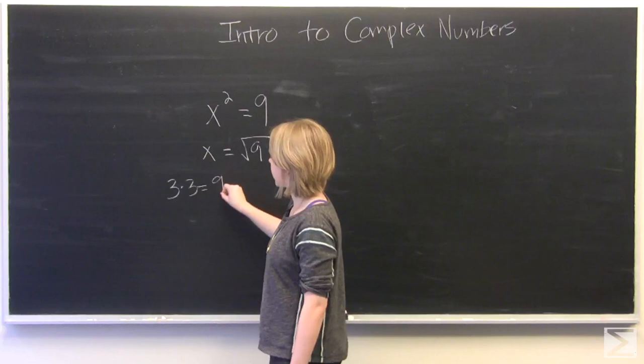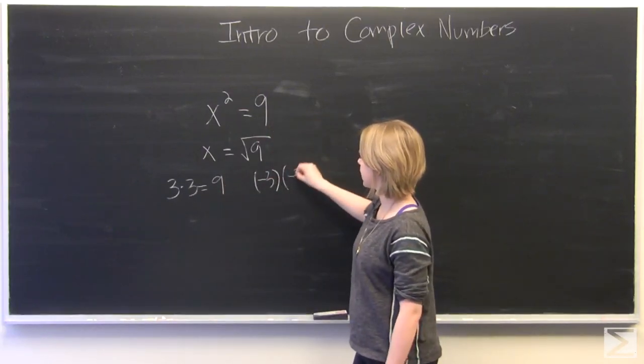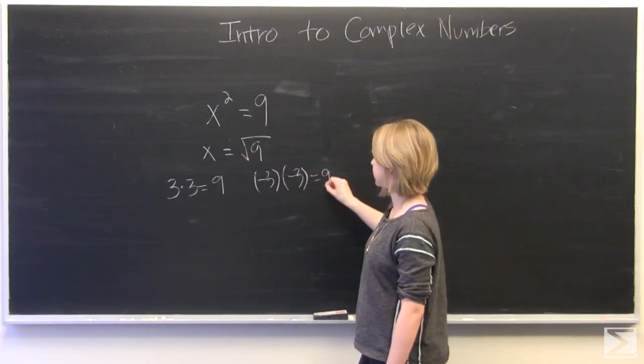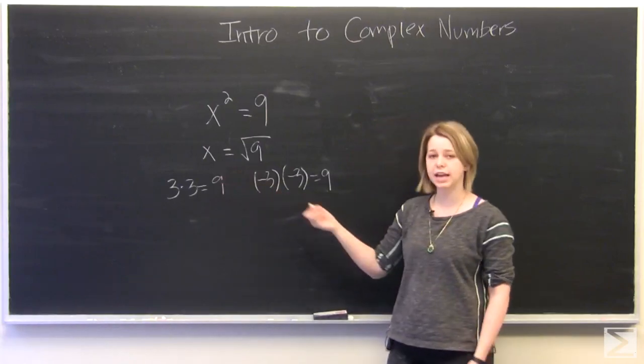So in this case, 3 times 3 is equal to 9, and negative 3 times negative 3 is equal to 9. So we have two answers: x is either equal to 3 or x is equal to negative 3.